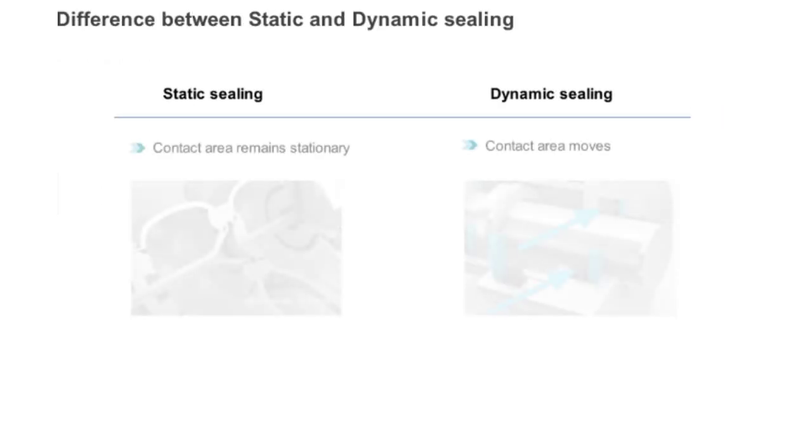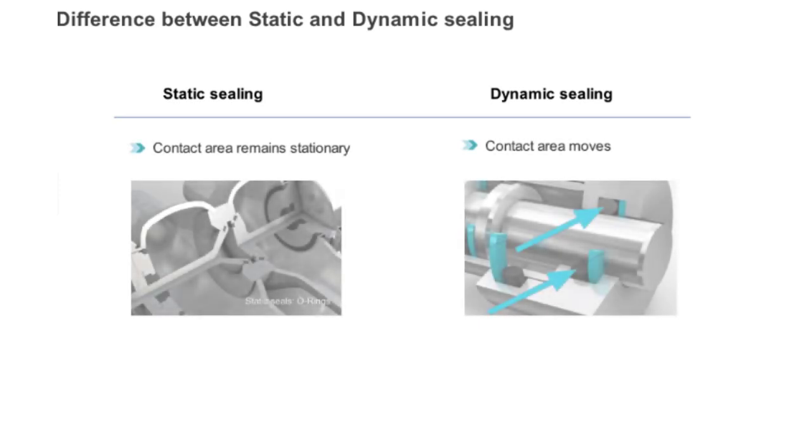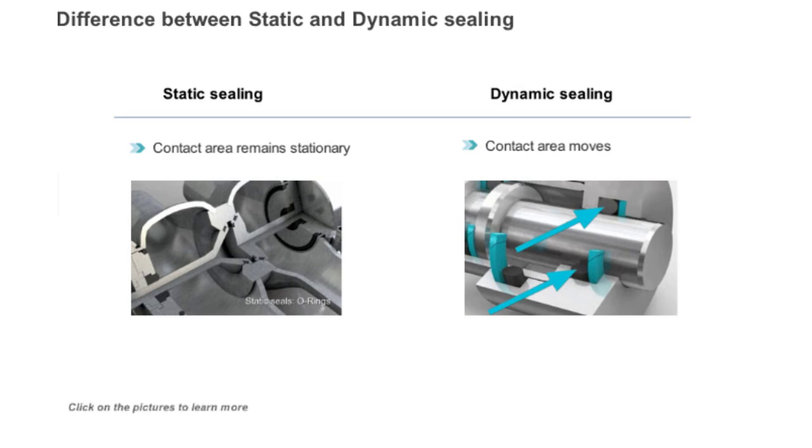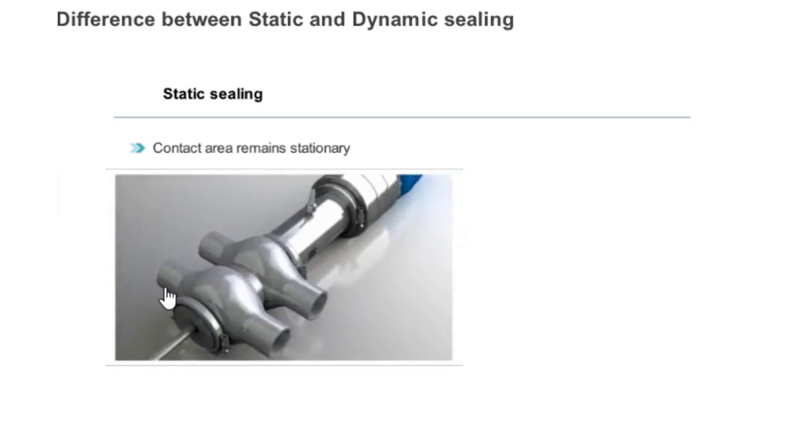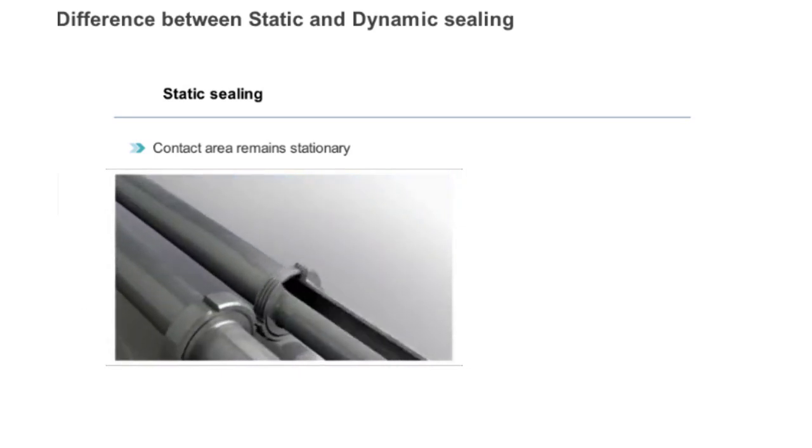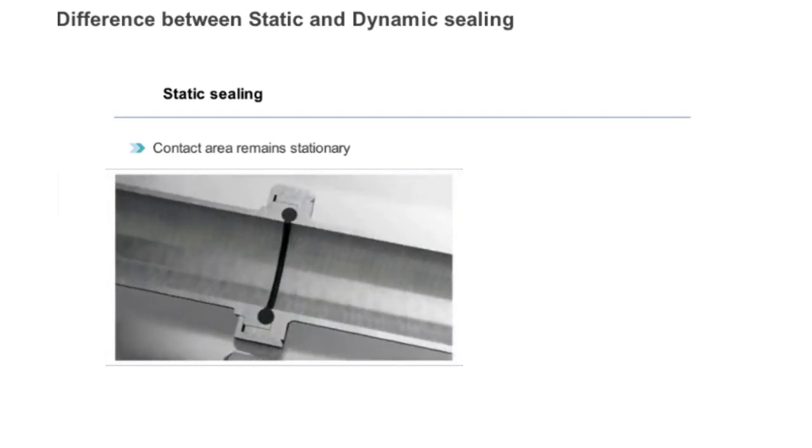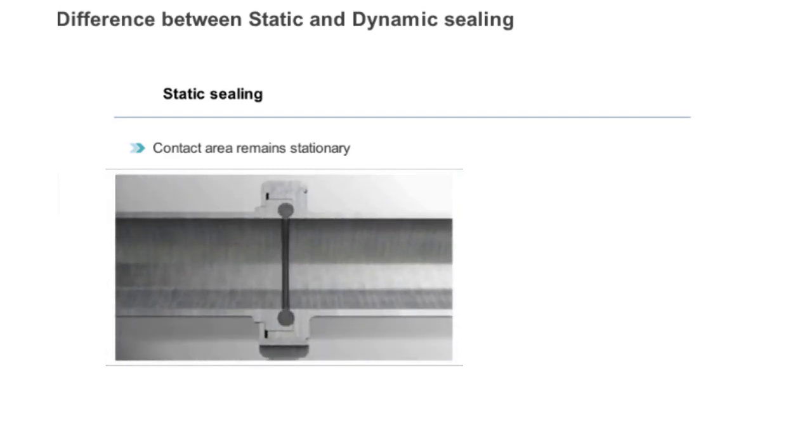Depending on whether the components are moving or not, the O-ring works as a dynamic or static seal. Static sealing is the most common field of application for O-rings. Here, the contact area of the O-ring does not move.